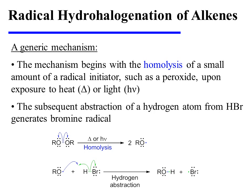The mechanism begins with the homolysis of a small amount of a radical initiator, such as a peroxide, upon exposure to heat or light. The subsequent abstraction of a hydrogen atom from HBr generates a key bromine radical that will be active in the following propagation steps.